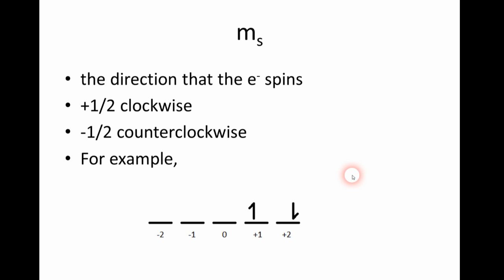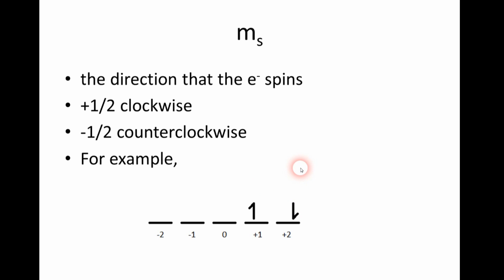For example, if I were to draw this in a diagram, an arrow going up would mean M sub S is positive one-half and the electron is spinning clockwise, and if the arrow is going down, then M sub S is negative one-half and the electron is spinning counterclockwise. Don't be confused with the mathematical convention that says positive is the counterclockwise direction.